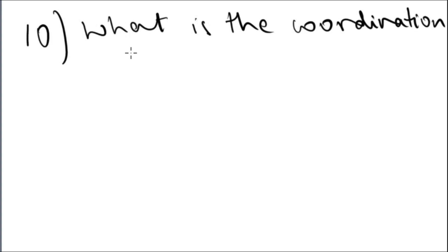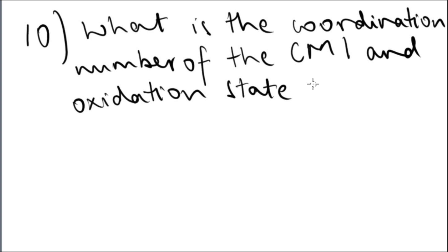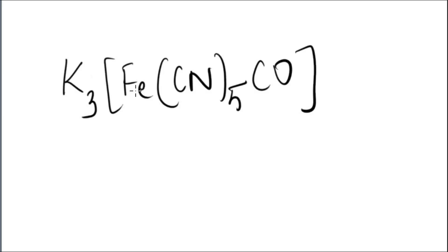Question number 10: what is the coordination number and the oxidation number of the central metal ion in this coordination compound? You have potassium in the outer sphere, you have iron, cyanide, and carbon monoxide. The coordination number is six because five cyanide and one carbon monoxide. One potassium is plus one, three will be plus three, so the complex ion is minus three. Carbon monoxide is neutral, zero. Cyanide is minus one times five will be minus five. So doing algebra, we can say that minus three plus five will give us plus two.